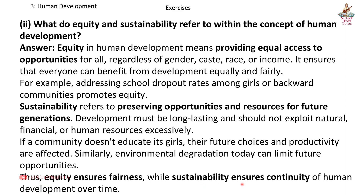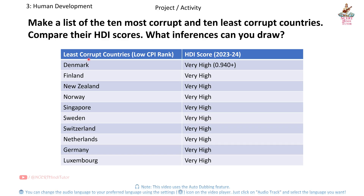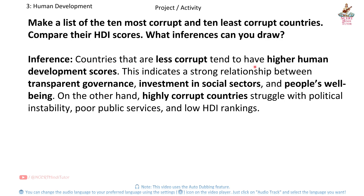Project Activity: Make a list of the 10 most corrupt and 10 least corrupt countries and compare their HDI scores. Least corrupt countries with Very High HDI (2023–24): Denmark (0.940), Finland, New Zealand, Norway, Singapore, Sweden, Switzerland, Netherlands, Germany, Luxembourg. Most corrupt countries and their HDI scores: South Sudan (Low), Syria (Low), Somalia (Low), Yemen (Low), Venezuela (Medium Low), Afghanistan (Low), North Korea (not officially ranked), Libya (Low), Chad (Low), Sudan (Low).